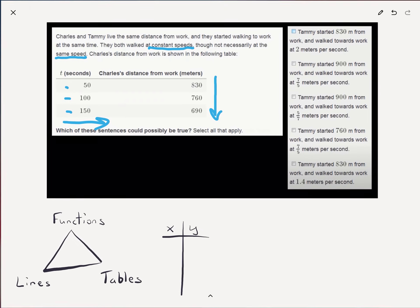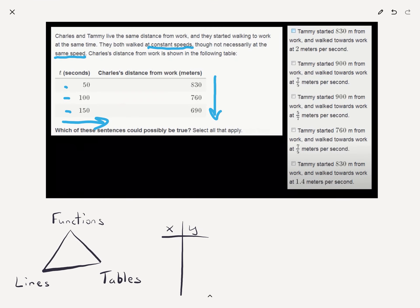Let's go back to our problem and keep reading. Okay? So, Tammy starts 830 meters away from work. Let's double check. Looks like that's the same as Charles. Good. Okay? And she walks towards work at 2 meters per second. Okay? Oh, I see. So, I'm, again, I'm reading it wrong.